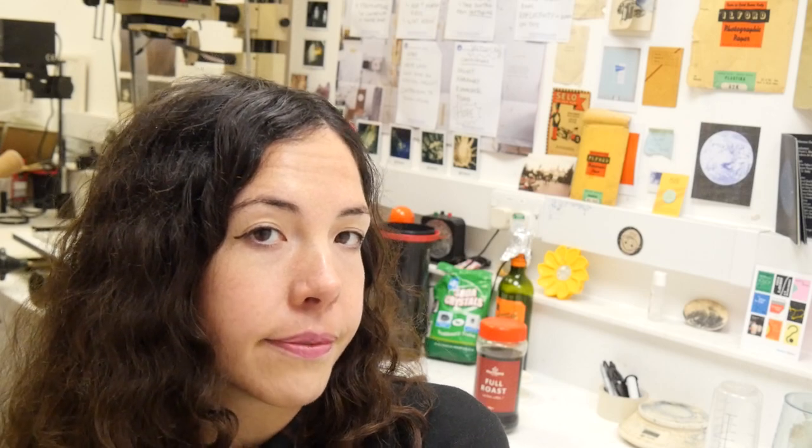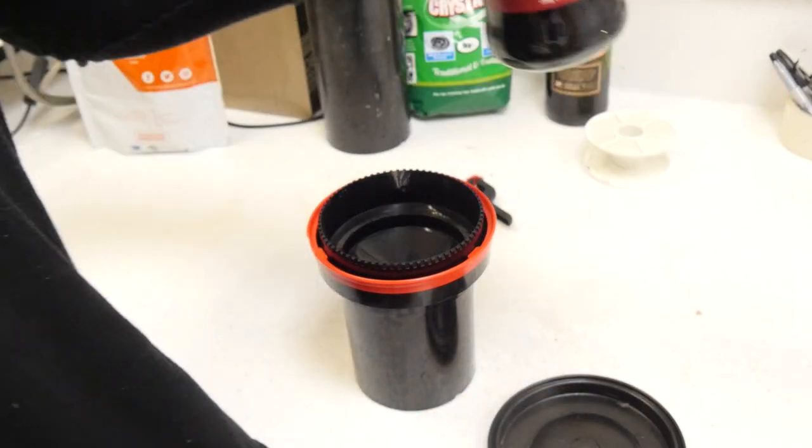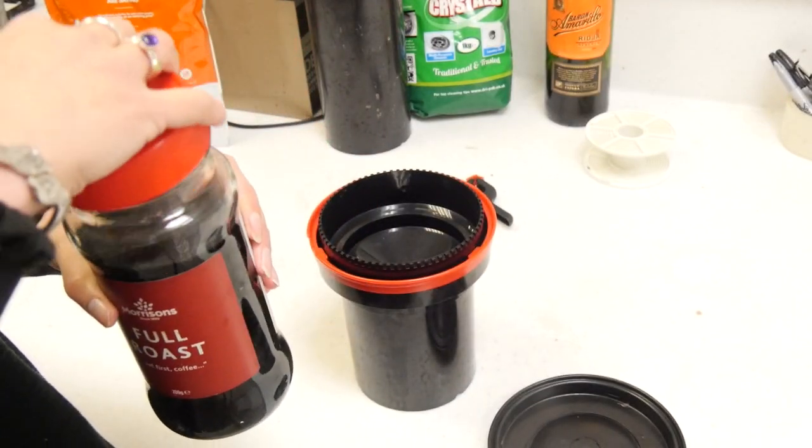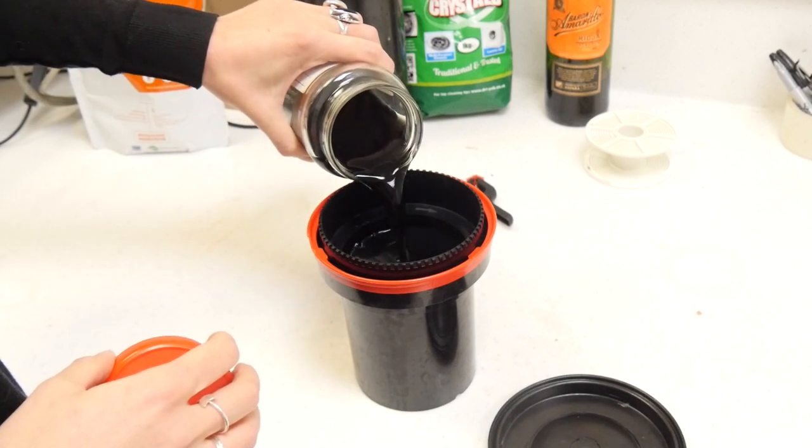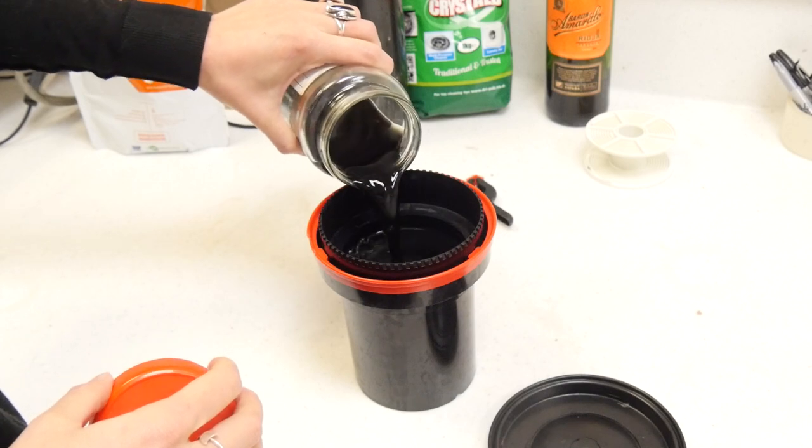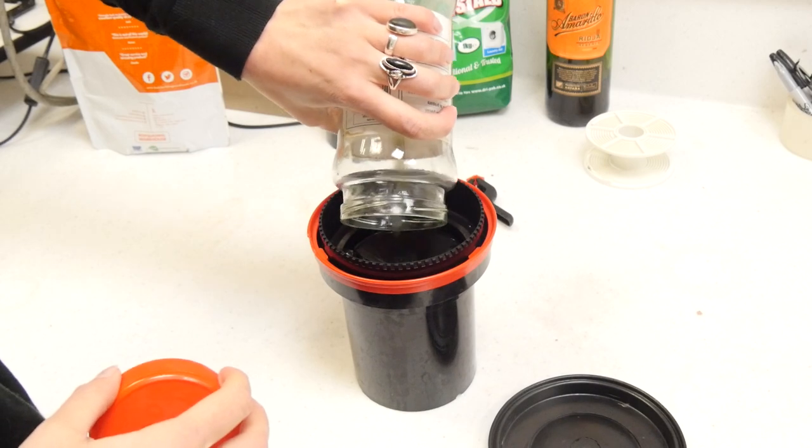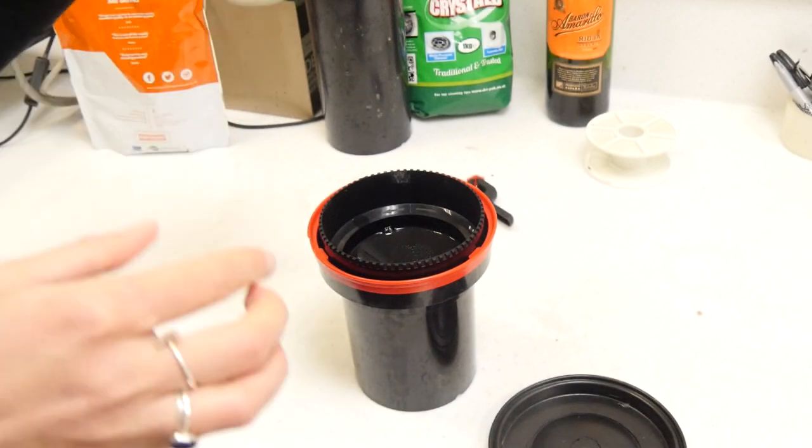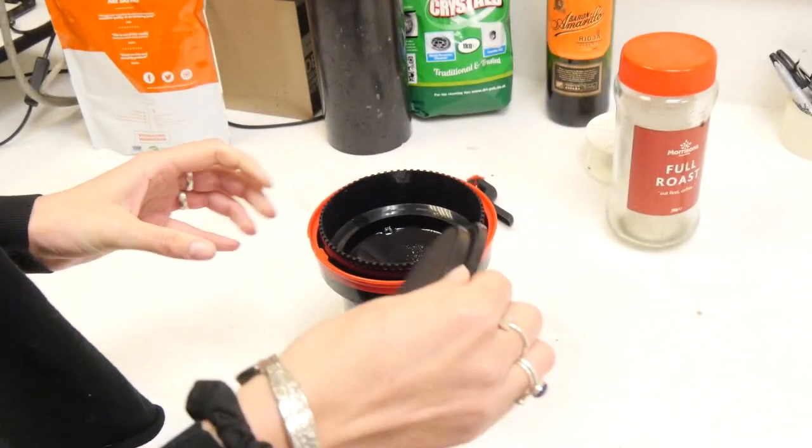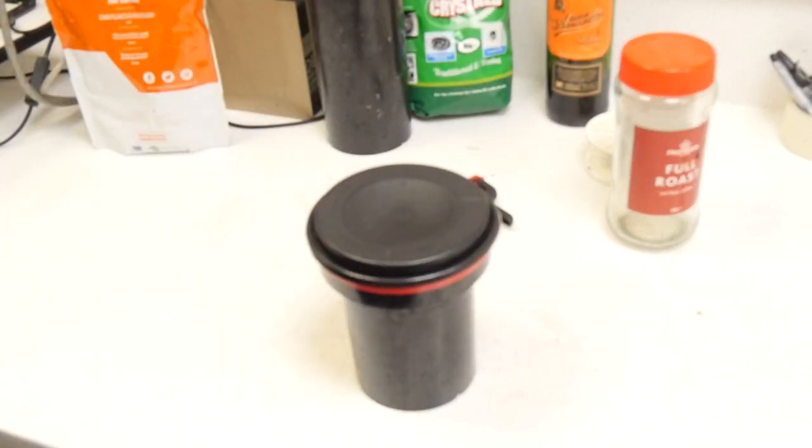So I'm going to go ahead and pour the developer into the canister now. I'm going to get my film and pour in the developer, which I've stored in this fetching Morrison's coffee cup. Smells Christmassy. So I'm going to leave that now for 30 minutes. And then I'm going to fix as usual. It smells so strong.